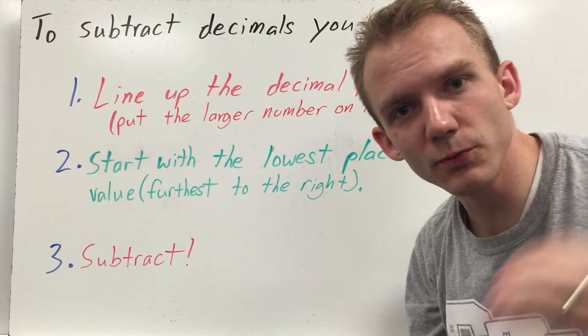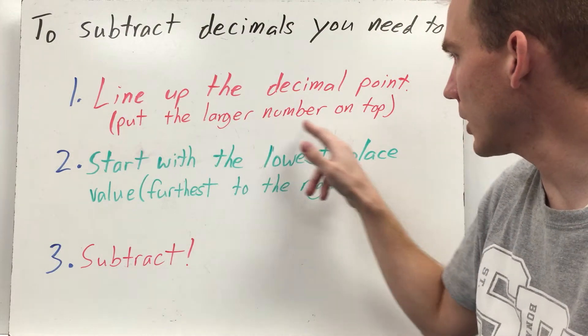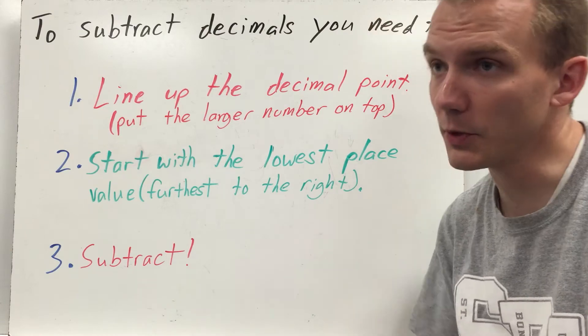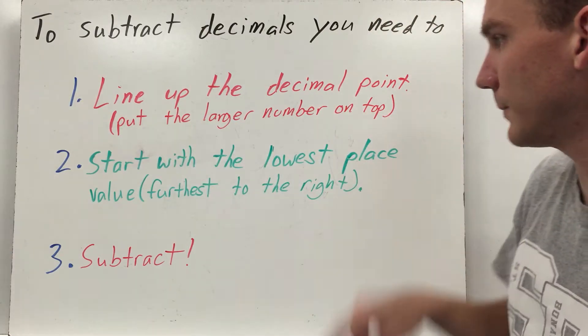To subtract decimals, there are three steps. The first one, line up the decimal point, put the larger number on top that'll help you find the difference. If you're putting a larger number on top, it's gonna help with your grouping. So remember, put the larger number on top, line up your decimal points.